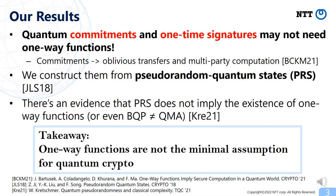In this work, we show that one-way functions may not be needed for constructing commitments and one-time signatures with quantum communication. It is known that commitments imply general multi-party computations in the quantum setting, so this means that multi-party computations may also be constructed without one-way functions.